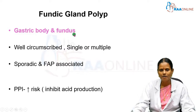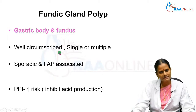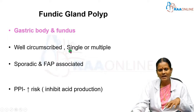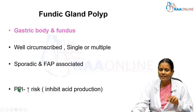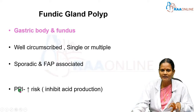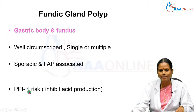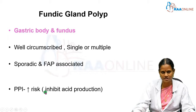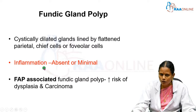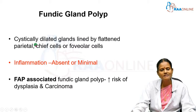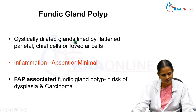The next type is the fundic gland polyp. As the name suggests, it is more common in the gastric body and fundus. It is well circumscribed and can be either single or multiple, sporadic, or associated with familial adenomatous polyposis coli. With increasing use of proton pump inhibitors, the occurrence of fundic gland polyps is increased because they inhibit gastric acid production. Compared to hyperplastic and inflammatory polyps, there is absolutely no or very minimal inflammation. The cystically dilated glands are lined by flattened parietal and chief cells, and very rarely foveolar cells.